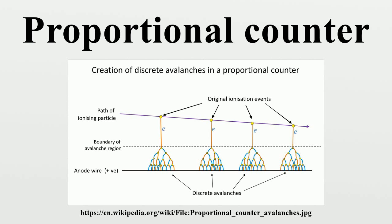The purpose of this is to use the multiplication effect of the avalanche produced by each ion pair. A key design goal is that each original ionizing event due to incident radiation produces only one avalanche. This is to ensure proportionality between the number of original events and the total ion current. For this reason, the applied voltage, the geometry of the chamber, and the diameter of the anode wire are critical to ensure proportional operation. If avalanches start to self-multiply due to UV photons, as they do in a Geiger-Müller tube, then the counter enters a region of limited proportionality.